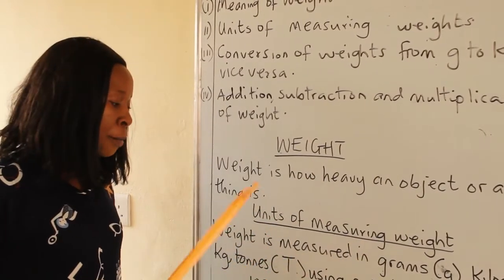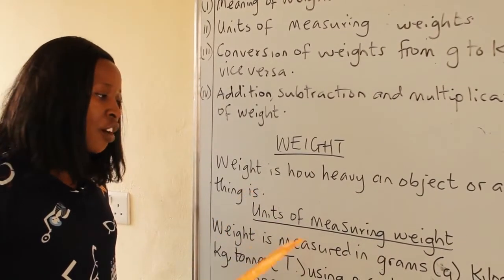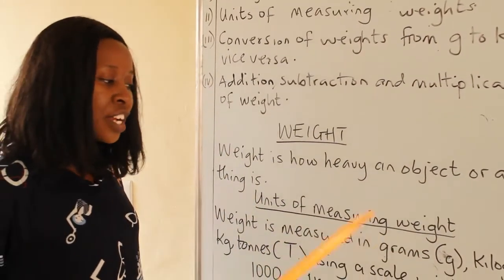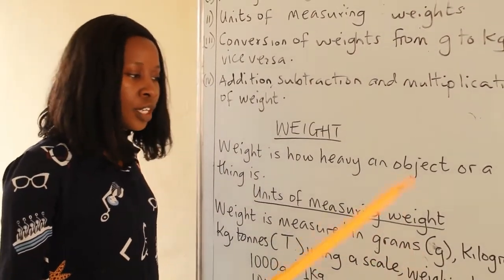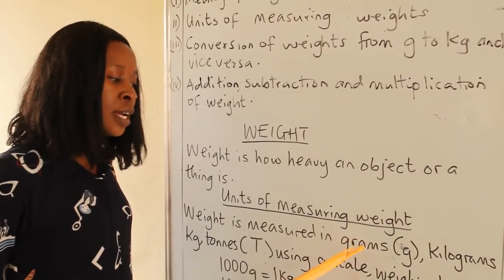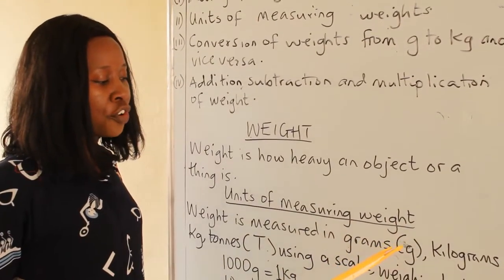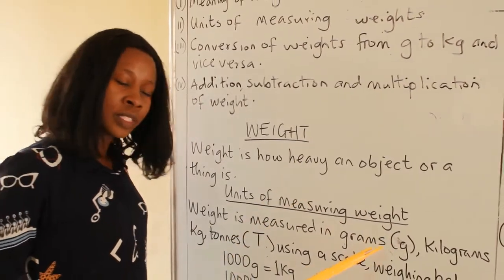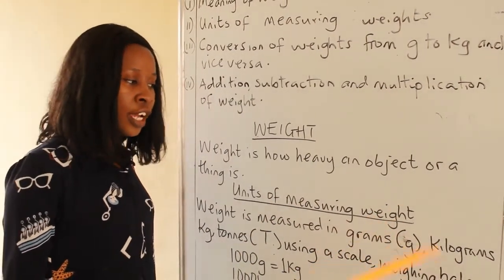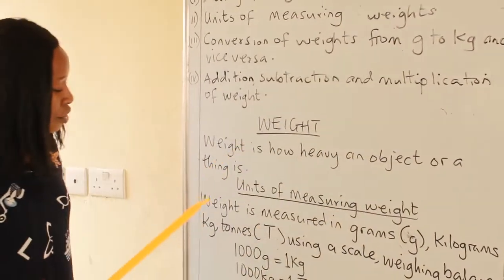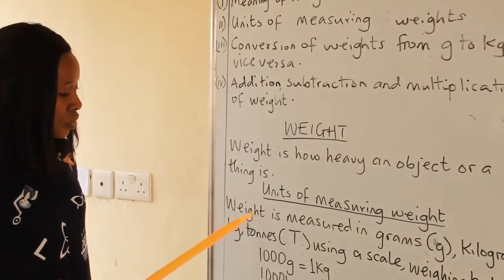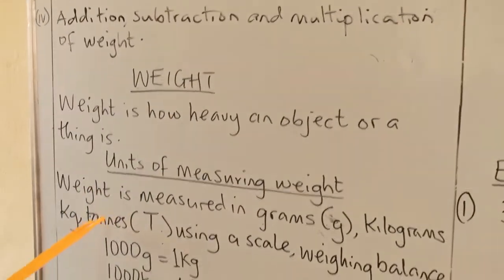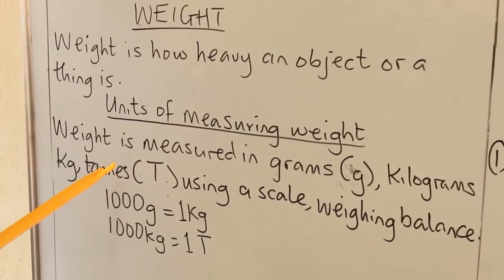We have units of measuring weight. Weight is measured in grams — the symbol for gram is g — kilograms, with the symbol kg, and tonnes for very large weights.